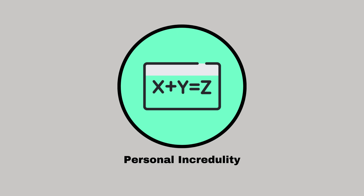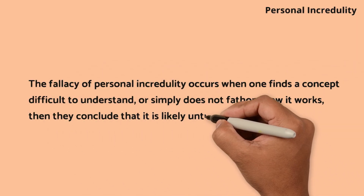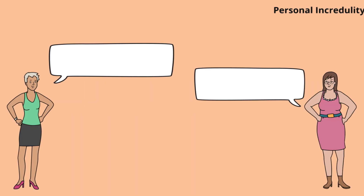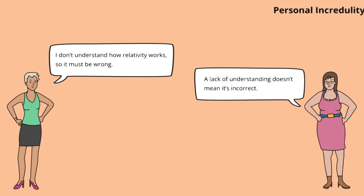Personal incredulity. The fallacy of personal incredulity occurs when one finds a concept difficult to understand or simply does not fathom how it works, then concludes that it is likely untrue. Alice dismisses complex scientific concepts just because they are hard to understand. Brooke stresses that personal difficulty in understanding does not equate to falsehood.